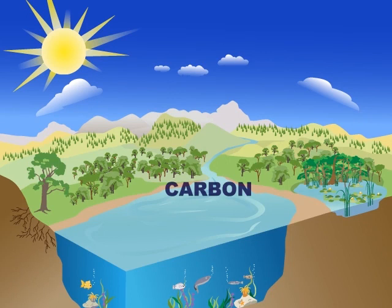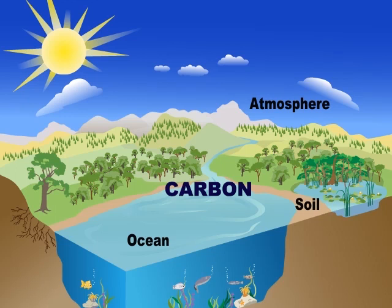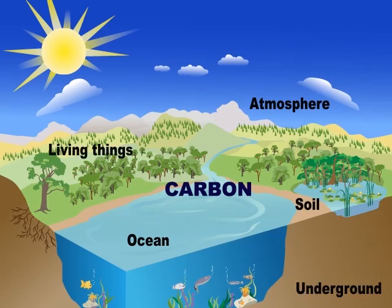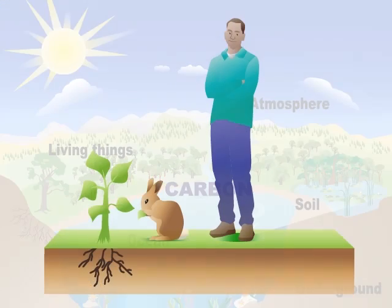Carbon is an element that's found nearly everywhere on Earth — in the atmosphere, the soil, the ocean, and deep inside the Earth. It's also the main ingredient inside of every plant and animal, including you.